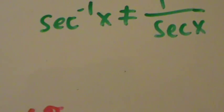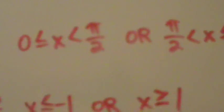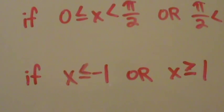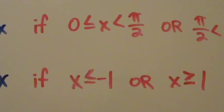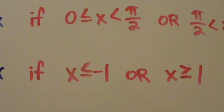That's pretty much it for the inverse secant function. Inverse cosecant coming up next, followed by some properties and examples of evaluating. See you next time.